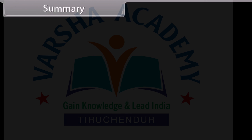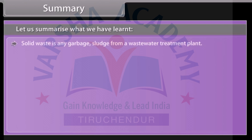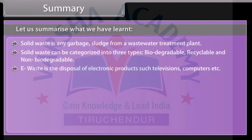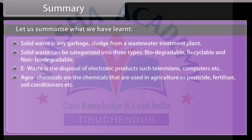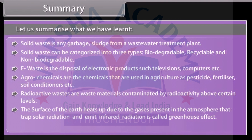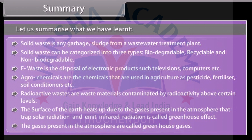Summary: Solid waste is any garbage, sludge from a wastewater treatment plant. Solid waste can be categorized into three types: biodegradable, recyclable, and non-biodegradable. E-waste is the disposal of electronic products such as televisions and computers. Agrochemicals are the chemicals used in agriculture as pesticides, fertilizers, soil conditioners, etc. Radioactive wastes are waste materials contaminated by radioactivity above certain levels. The surface of the Earth heats up due to gases present in the atmosphere that trap solar radiation and emit infrared radiation — this is called the greenhouse effect. These gases are called greenhouse gases.